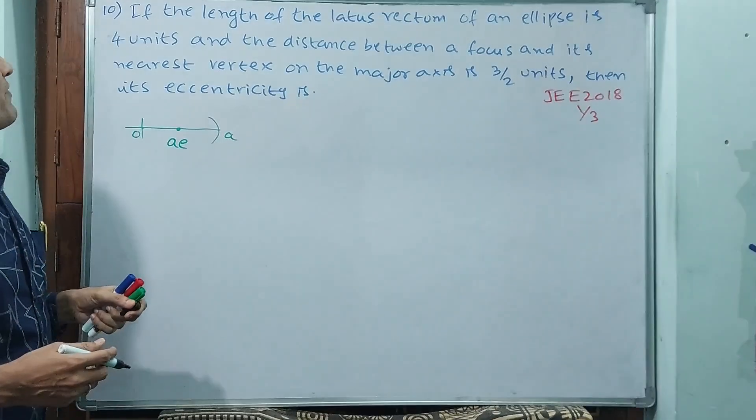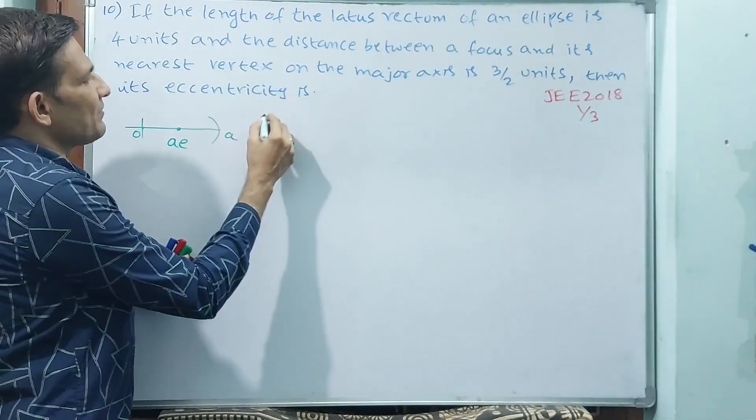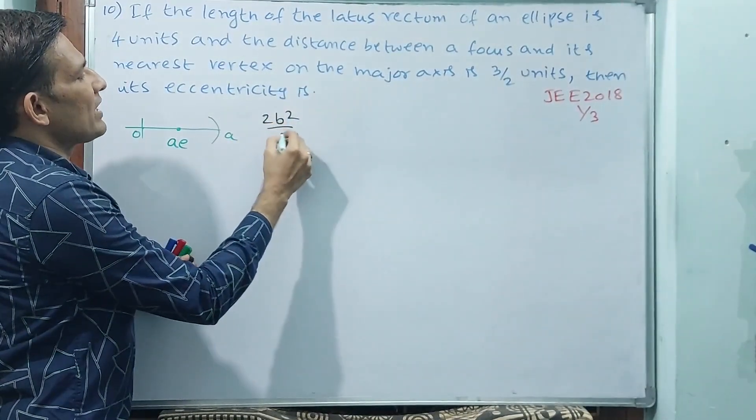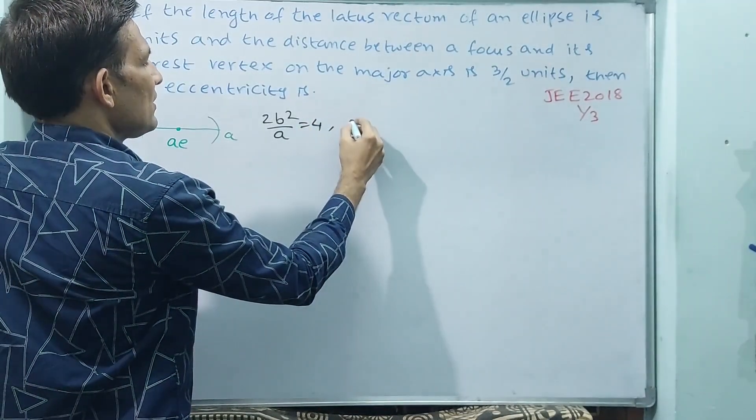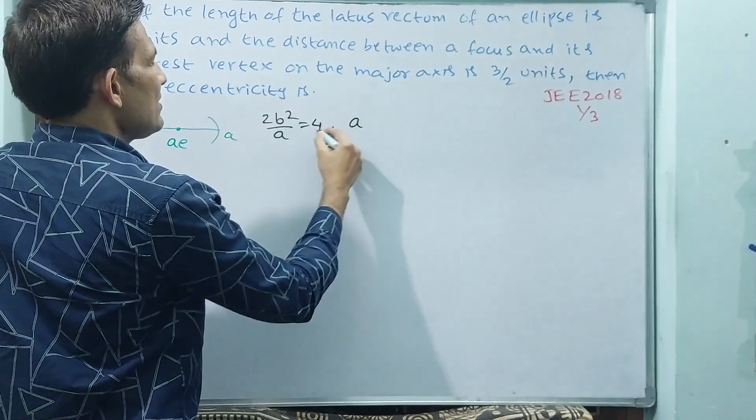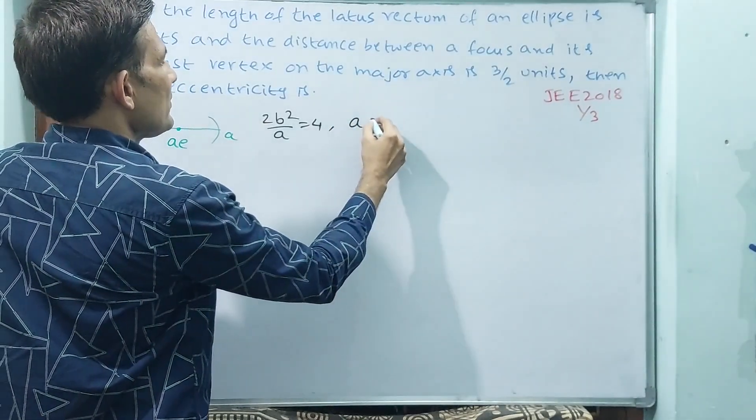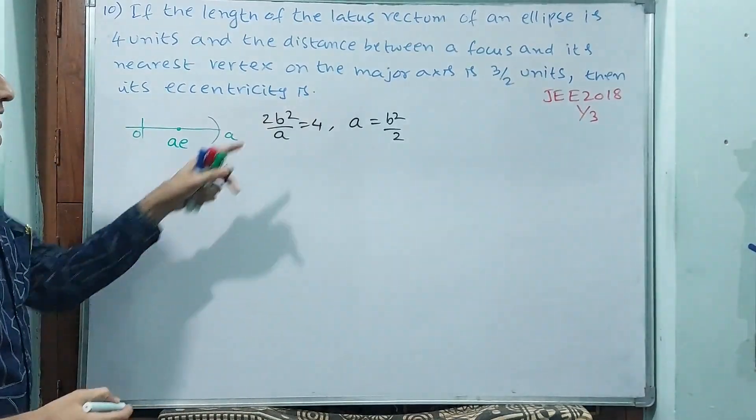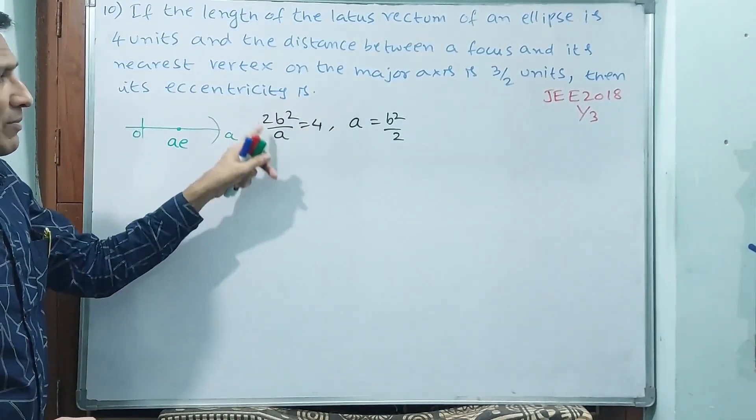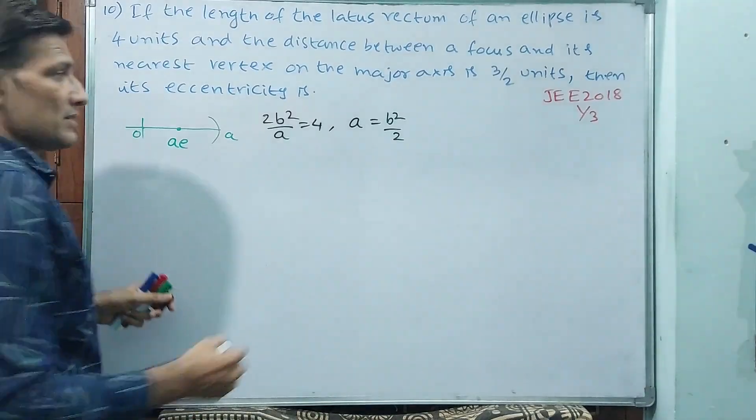Length of the latus rectum of an ellipse is 4 units. You see length of the latus rectum means 2b squared by a is equal to 4. Or else our a will be b squared by 2. Actually a is equal to b squared by 4, 2b squared by 4, 2 will divide this.